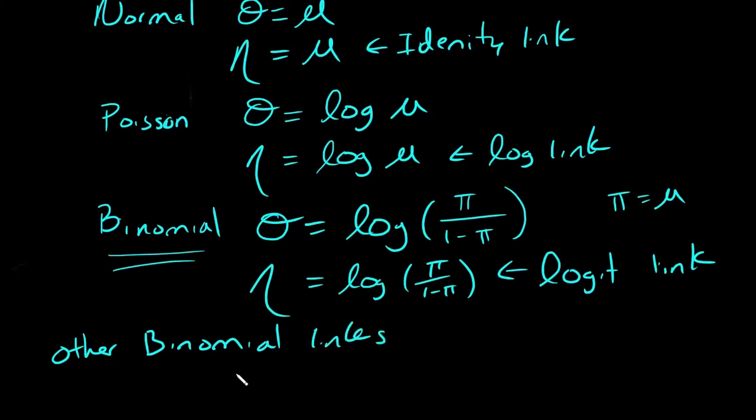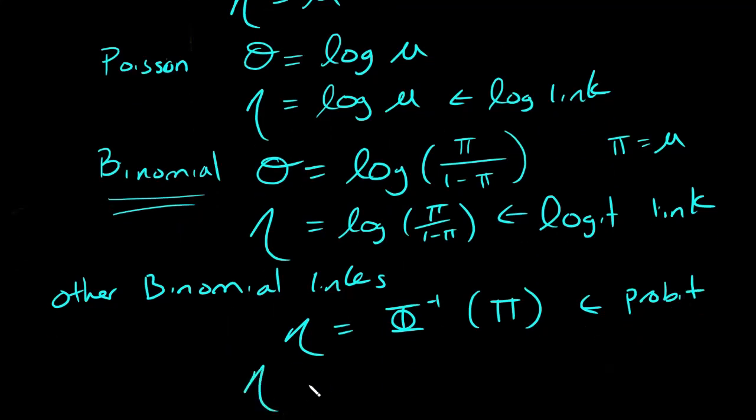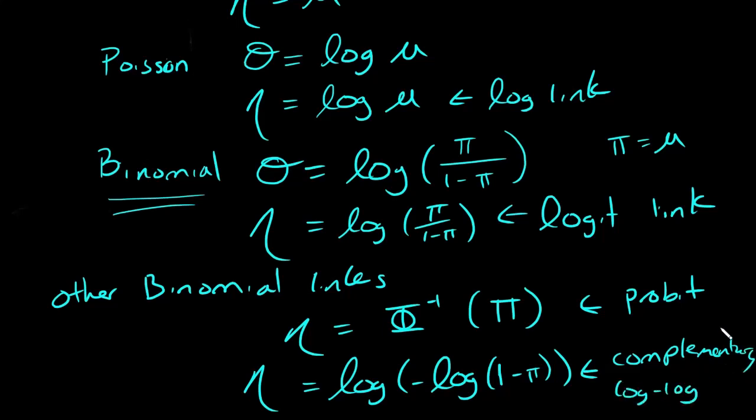Other binomial links include nu equals the inverse normal distribution with probability pi. This is called the probit link. Another popular choice is nu equals log negative log of one minus pi. This is called the complementary log log link.